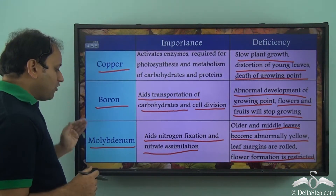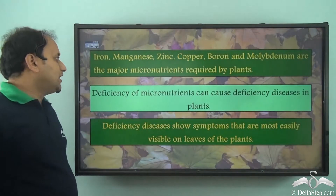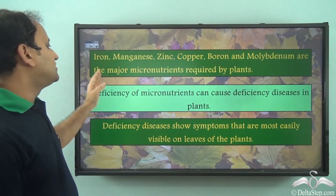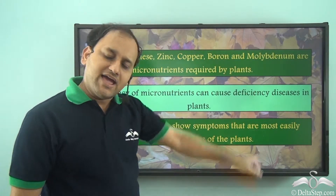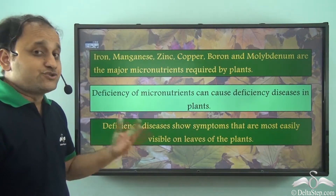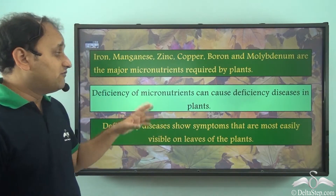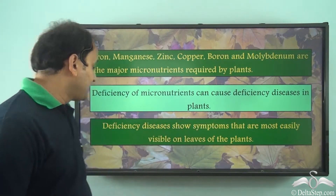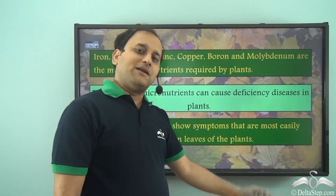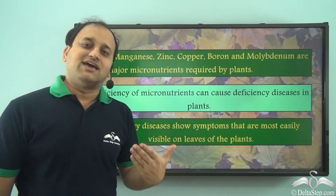So copper, boron and molybdenum are three more trace elements required by plants. Iron, manganese, zinc, copper, boron and molybdenum are the major micronutrients required by plants, and deficiency of micronutrients can cause deficiency diseases in plants. Whether it is deficiency of macronutrients or micronutrients, both will cause deficiency diseases, and these deficiency diseases show symptoms that are most easily visible on leaves of the plants. So by observing leaves, we can easily identify the deficiency disease in the plant.